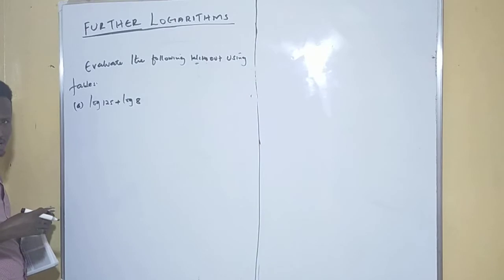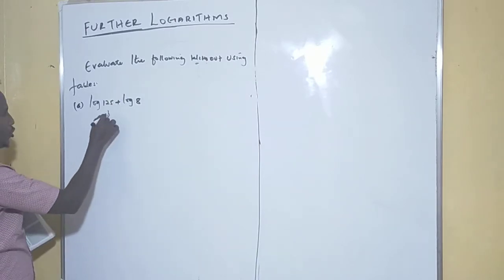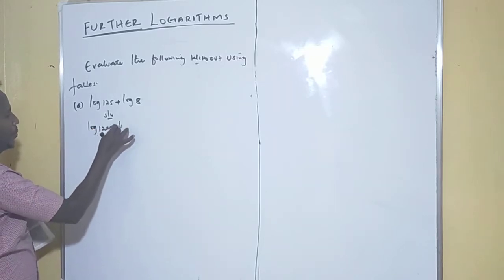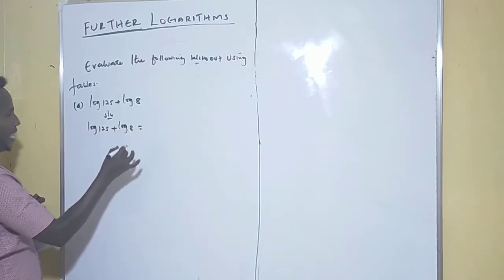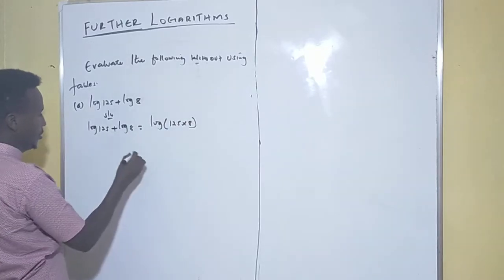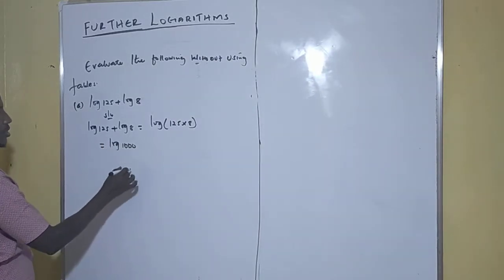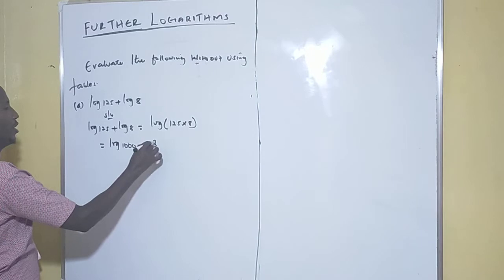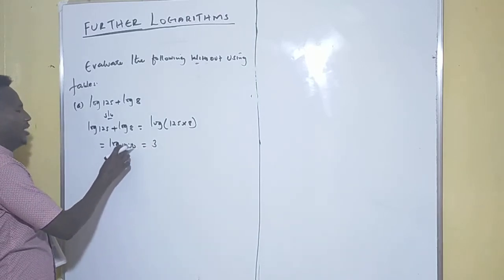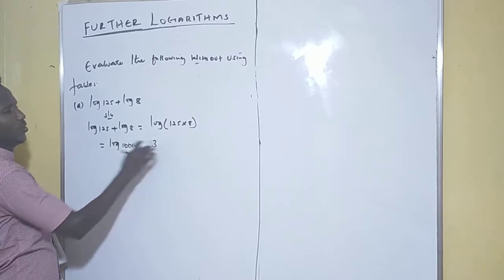Remember, when we are dealing with logarithms, plus means multiplication. Come to the solution: log 125 plus log 8 can be written as log of (125 times 8), which gives us log 1000. So it will give us 3. Most teachers just say log 1000 equals 3, but you ask yourself where that 3 comes from.